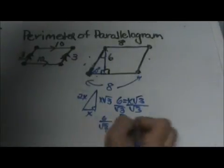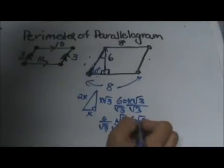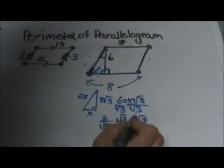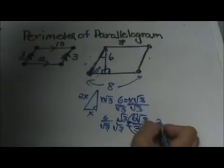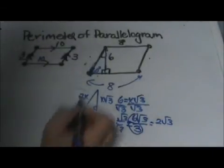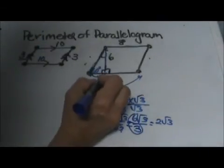And over 6√3 and that simplifies down to those cancel out or reduce to 2√3. So I know the short leg is 2√3.